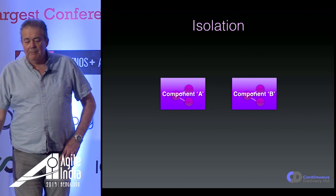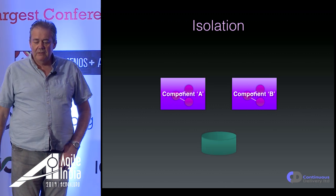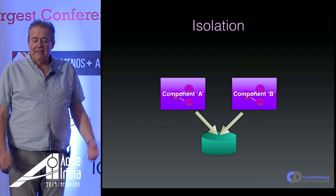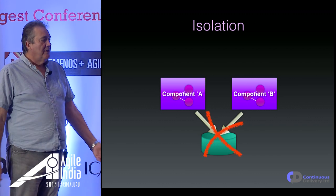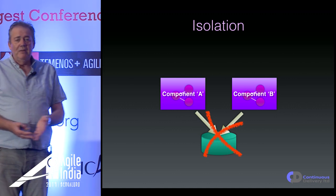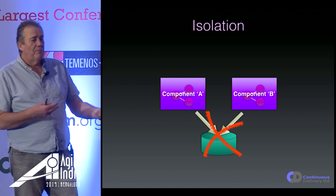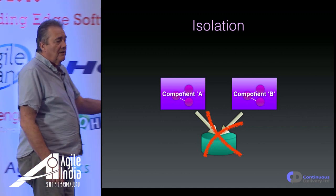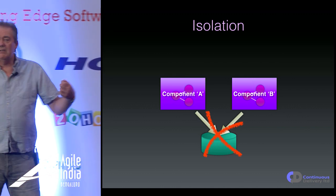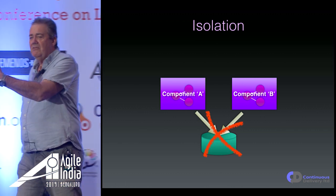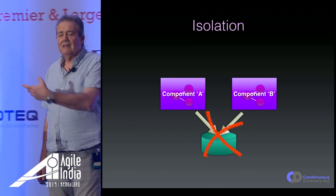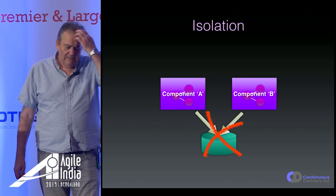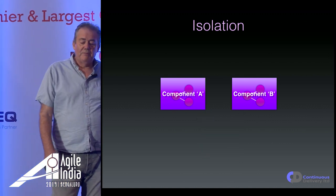The whole system is architected around intercomponent communication over these protocols — these business-level conversations happening between components. Let's talk about isolation: here are two components sharing a database, and that's what we're trying to avoid. We don't want these back channels of communication because they compromise the determinism of the system. We'd like to be able to completely replay the stream of events and get the service back into exactly the same state. We can't do that with back channels.